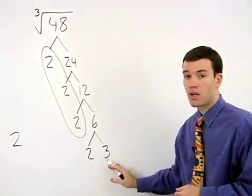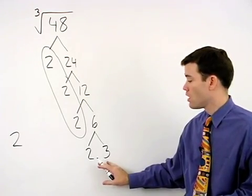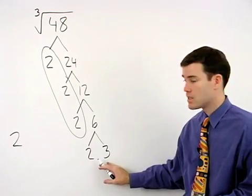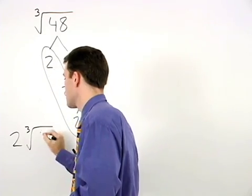The two and three that are left over will stay inside the cube root, multiplying together to make 6, so we have 2 times the cube root of 6.